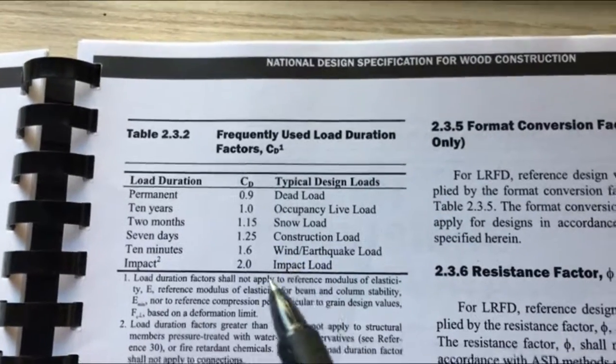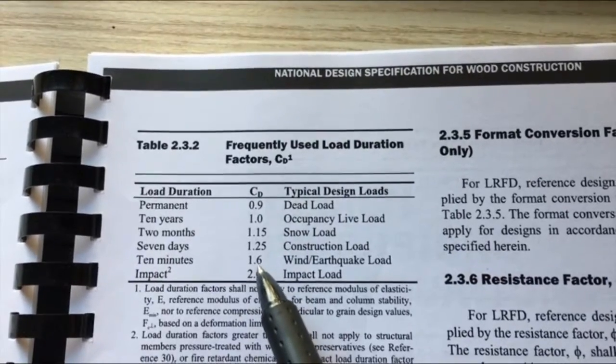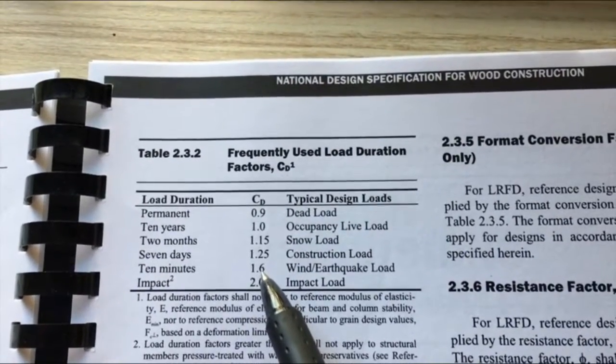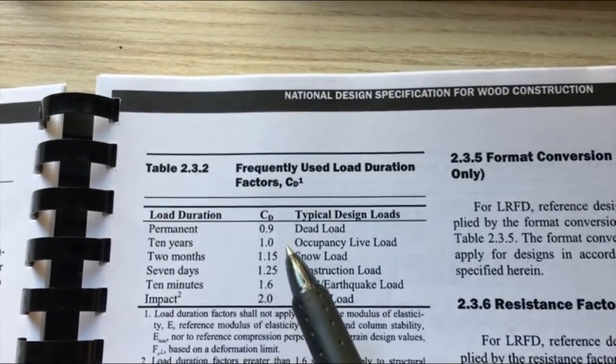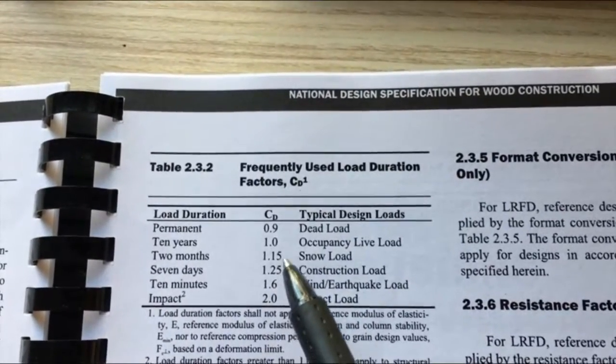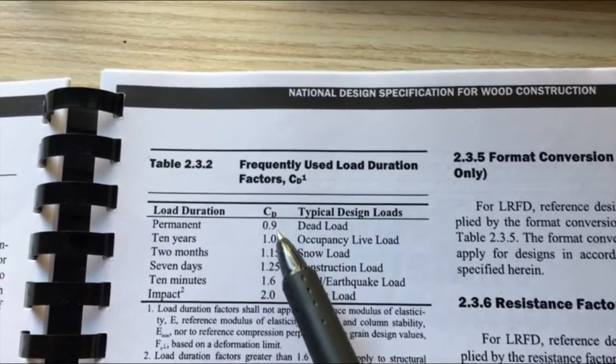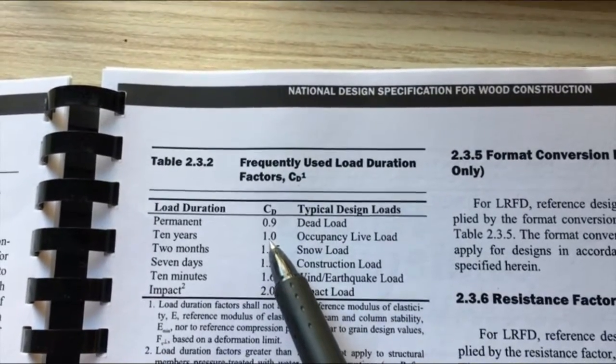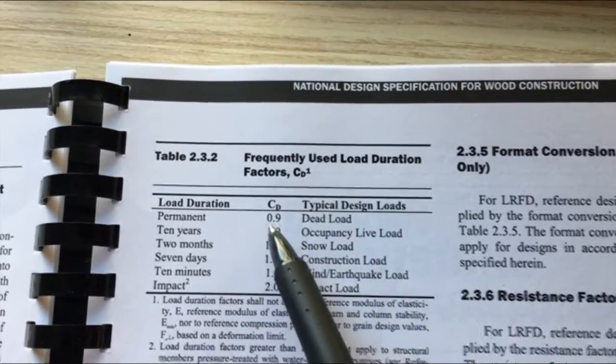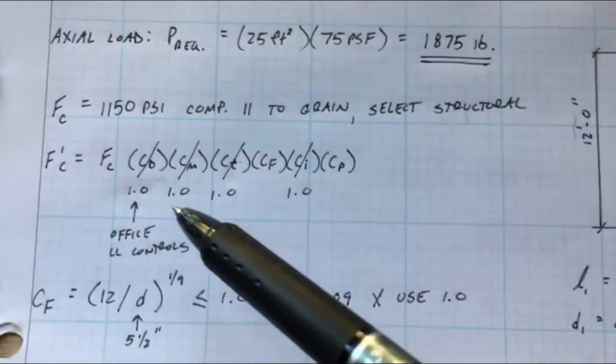Our live load, if you had like wind in this case, wind is a low duration effect. You have gusts of wind so that actually gets you a 1.6 factor which actually increases the strength that you get from your column or your wood member. But the longer that a load is anticipated to be applied, the lower factor you get to apply to it. In this case we have a live load so we get to use 1.0 versus the other one that we have as a dead load which is 0.9. So we get to use 1.0 because it's larger.